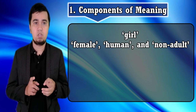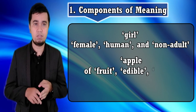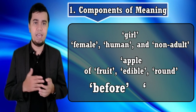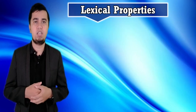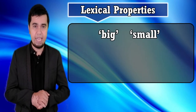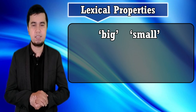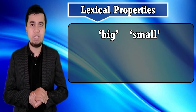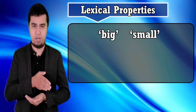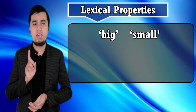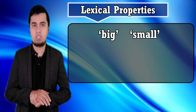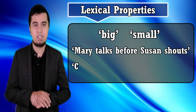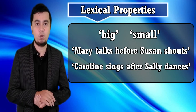Components of meaning: the meaning of a word can often be broken up into smaller components. For example, the meaning of 'girl' is made up of female, human, and non-adult. The meaning of 'apple' is made up of fruit, edible, round, and so on. This components view of meaning was used to study development of words like 'before' and 'big' in English children. At one stage they know one component but not the other — they know 'big' and 'small' share a size component but think they both mean 'big'; or they know 'before' and 'after' are to do with time but do not know which means 'prior' (Clark, 1971). Second language learners found it much easier to understand 'Mary talks before Susan shouts' than 'Caroline signs after Sally dances' (Cook, 1977).